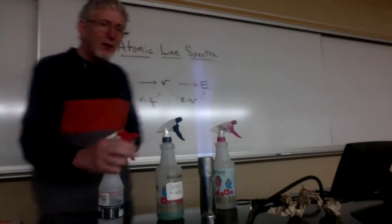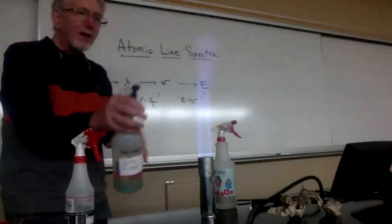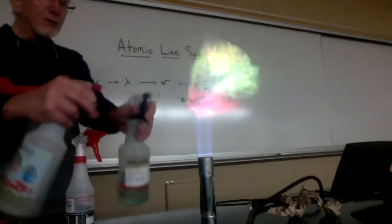And as the electrons bounce back and forth amongst those allowed energy states, they will emit very specific colors, wavelengths, lines of light. And we can do two at a time.